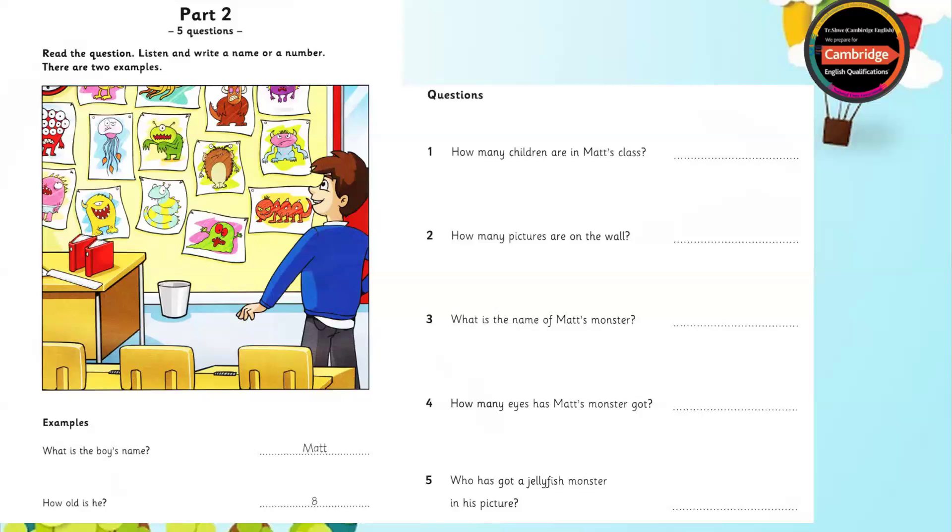Five. Whose is this picture? The one with the jellyfish monster? It's my friend Bill's. You spell his name. B-I-L-L. Bill? Okay. His monster is very scary. Yes, it is. And ugly. What a great classroom. Thanks.